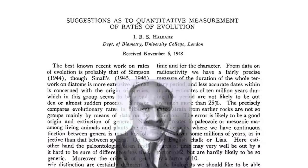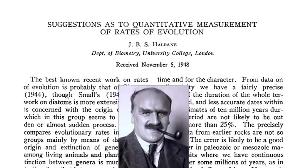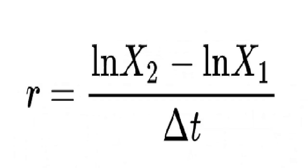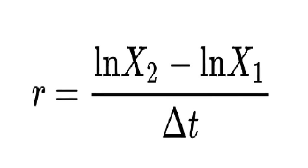In 1949, John Burden Sanderson Haldane published his paper, Suggestions as to Quantitative Measurement of Rates of Evolution. In one equation, X1 and X2 are the initial and final values of a particular trait, respectively.